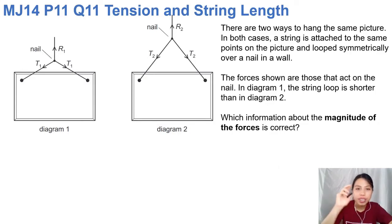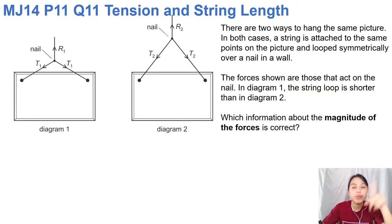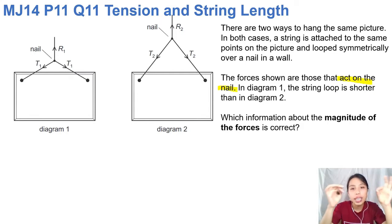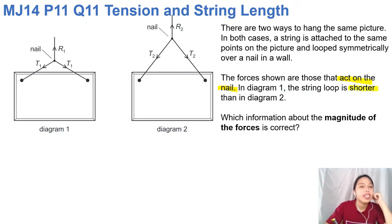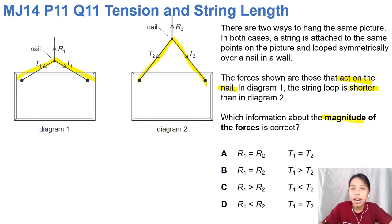Here we have two picture frames — what's the difference between them? Look at the triangle. Reading the question: there are two ways to hang the same picture. In both cases a string is attached in a loop symmetrically. The forces shown are the forces acting on the nail, so all these T and R arrows are the forces on the nail that's holding up the picture on the wall. Diagram one's string loop is shorter, and this is the longer string.